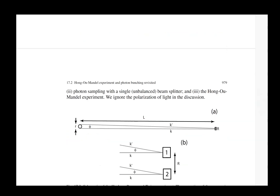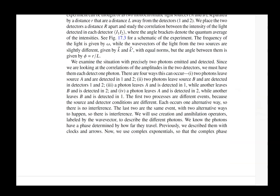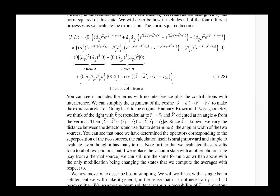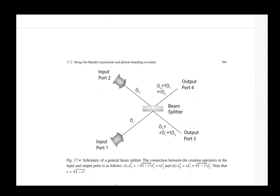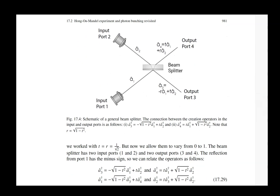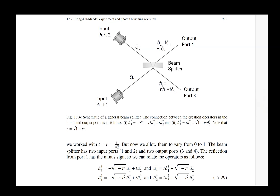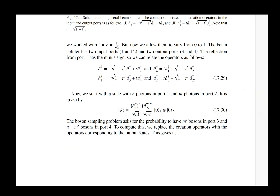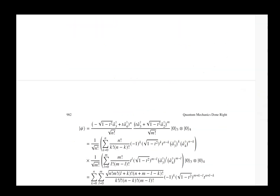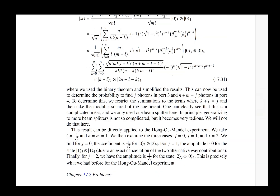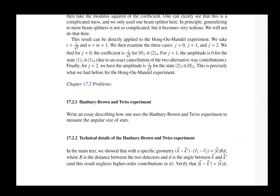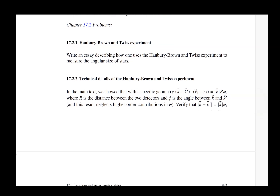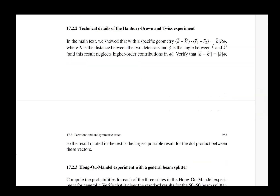We come back and look at the Hong-Ou-Mandel experiment again — and of course you can't do that without also talking about Hanbury-Brown and Twiss. Now we're doing it in second-quantized form, working with operators and looking very carefully at how things work with a beam splitter that is not necessarily 50-50. This requires us to work more carefully to get everything right, and in essence we are correcting something from chapter 4 that wasn't wrong for the 50-50 case but was potentially misleading.